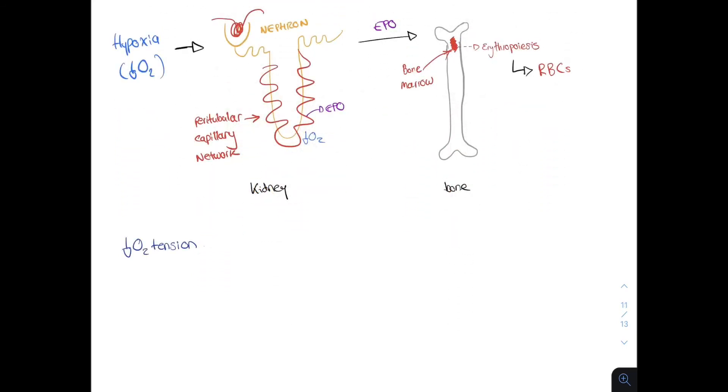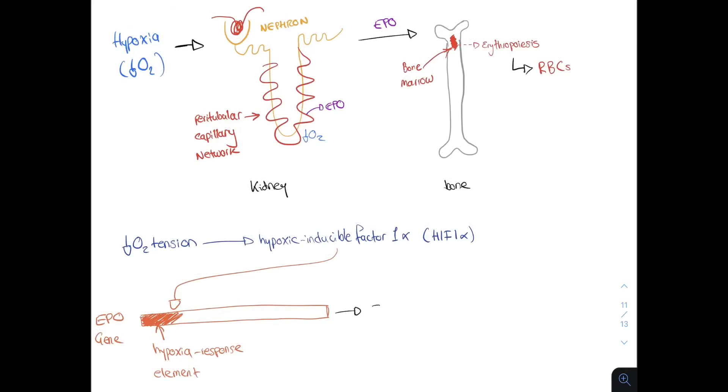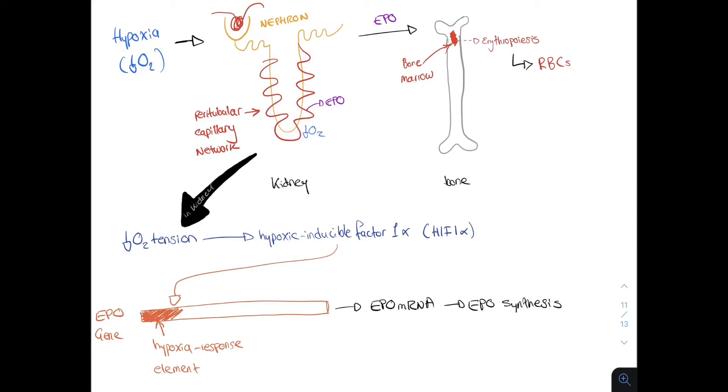What you need to know is how oxygen tension triggers EPO production. Here we have low oxygen tension within the peritubular capillaries. This triggers the production of a very important factor known as hypoxic inducible factor 1-alpha or HIF1-alpha within the cells of this region. This factor then binds to the hypoxia response element on the EPO gene on chromosome 7. This triggers EPO synthesis.